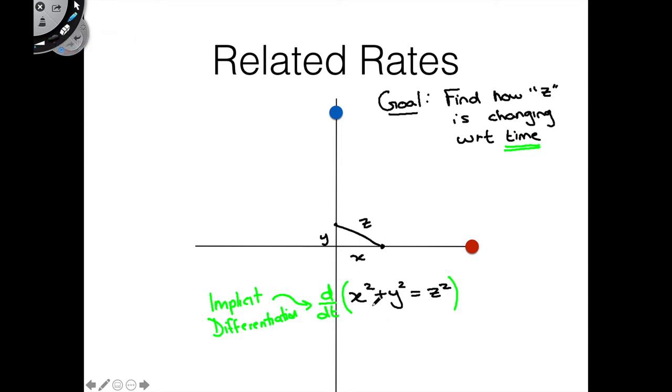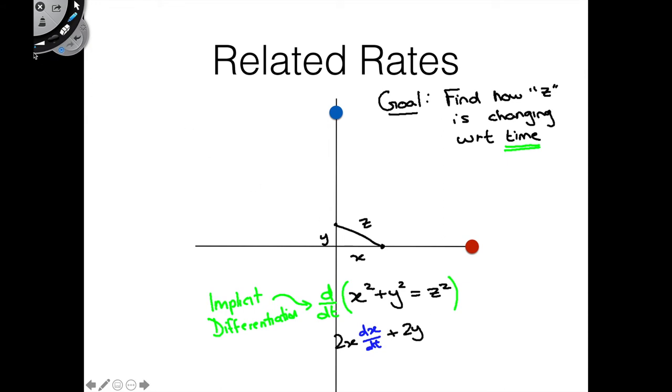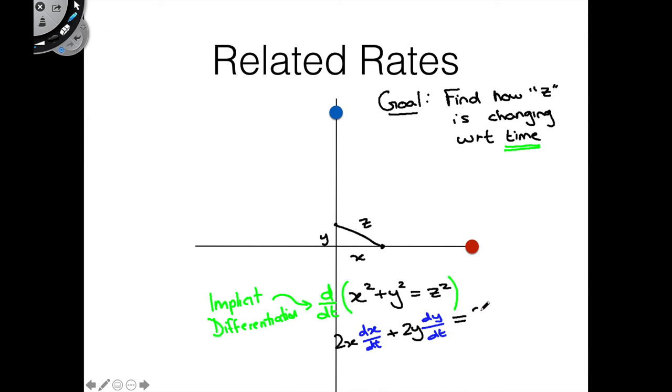We're going to need to call upon implicit differentiation to help us take this derivative. And if we do that, here's what we end up with. We're going to end up with 2x times dx/dt, because remember, t is our independent variable, not x. So we're going to have to tag on that dx/dt. Likewise for the y, we will have 2y times dy/dt. And then last but not least, we will have a 2z, we're just using the power rule there, and here's the quantity that we really want, dz/dt. And that right there is what answers this question for us. That is what we're looking for. This will tell us how z is changing with respect to time.